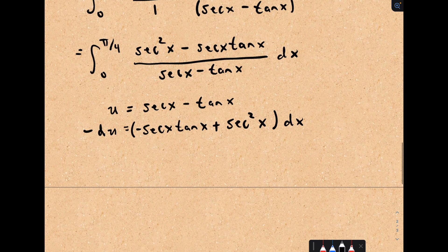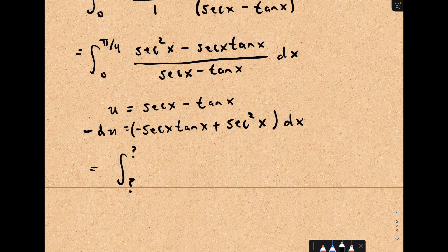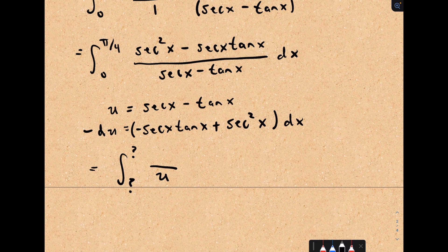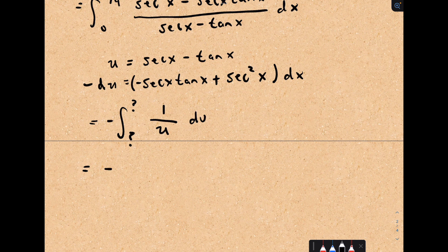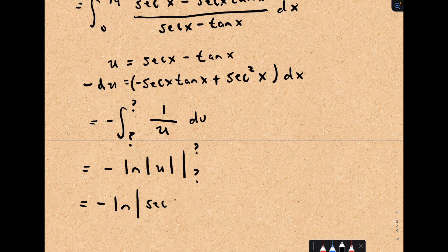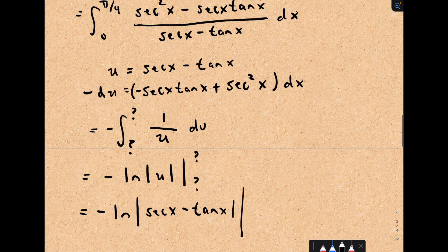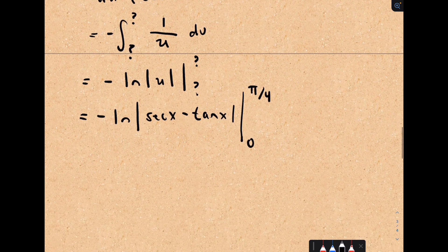I'm doing a u-substitution. Normally, I should compute new limits of integration. I'm going to put little question marks because I'm going to turn it back into x when I'm done. In the denominator, we have u. That's what the denominator was equal to. The numerator is equal to negative 1 du. If we integrate, I've got the natural logarithm of the absolute value of u. That would be negative the natural logarithm of secant x minus tangent of x. And now I've gone back to the original variable. I can go back to the original limits of integration, which were 0 to pi over 4.